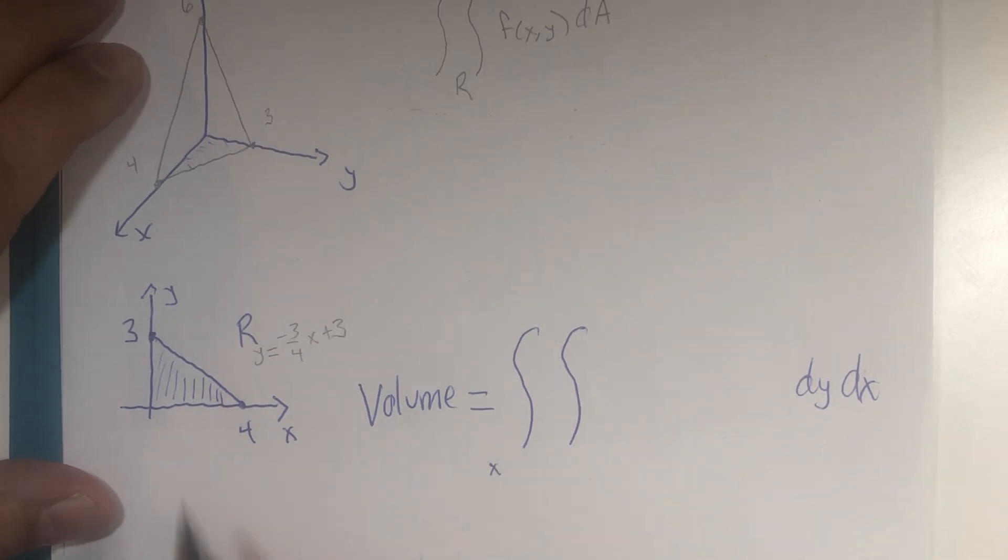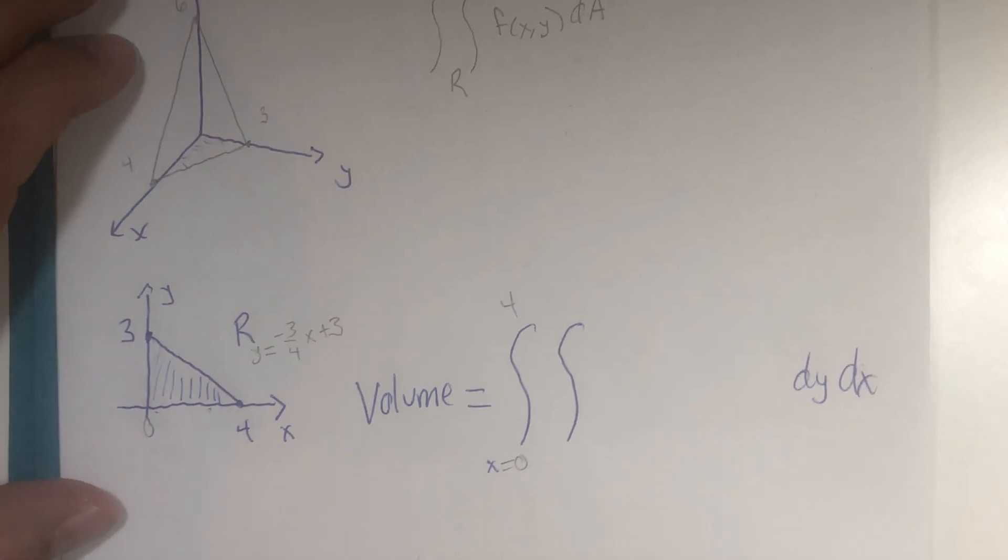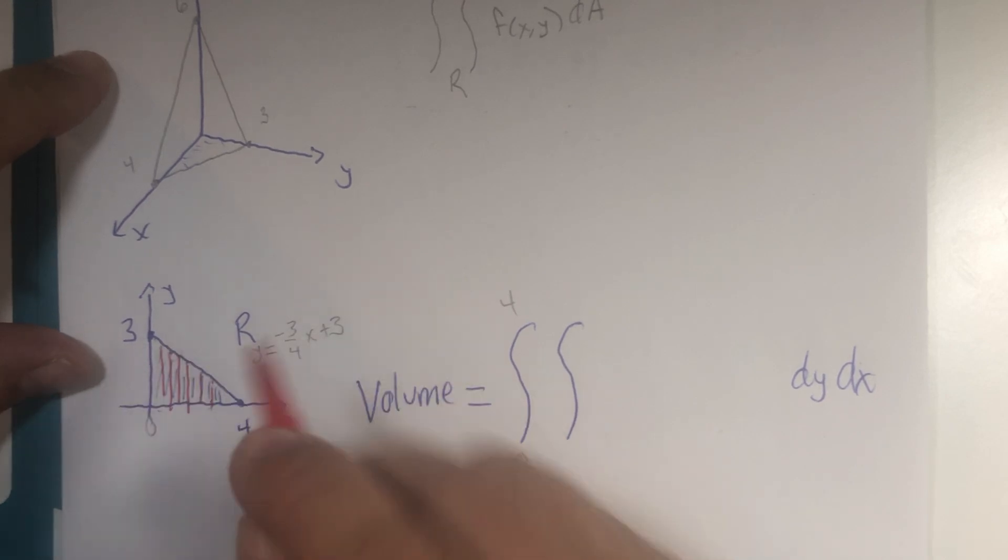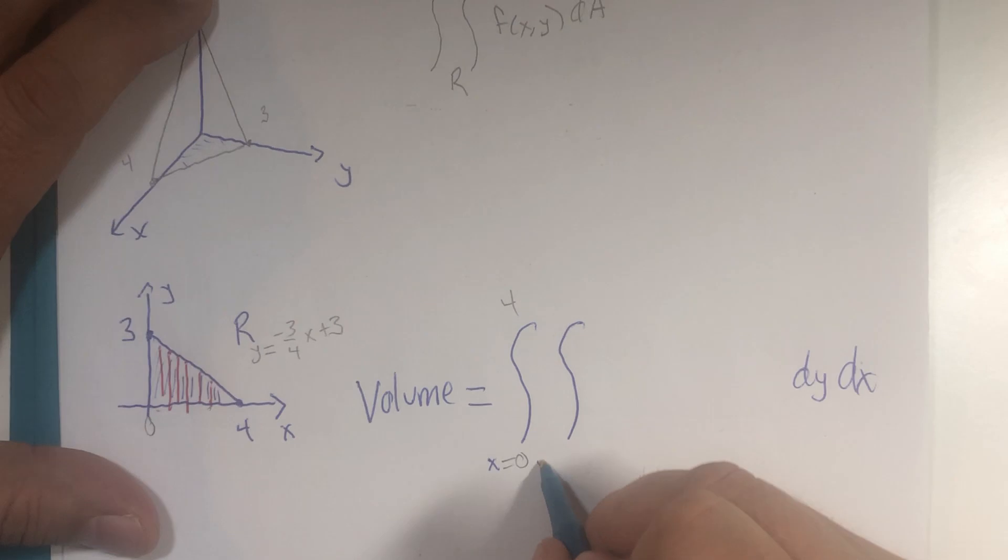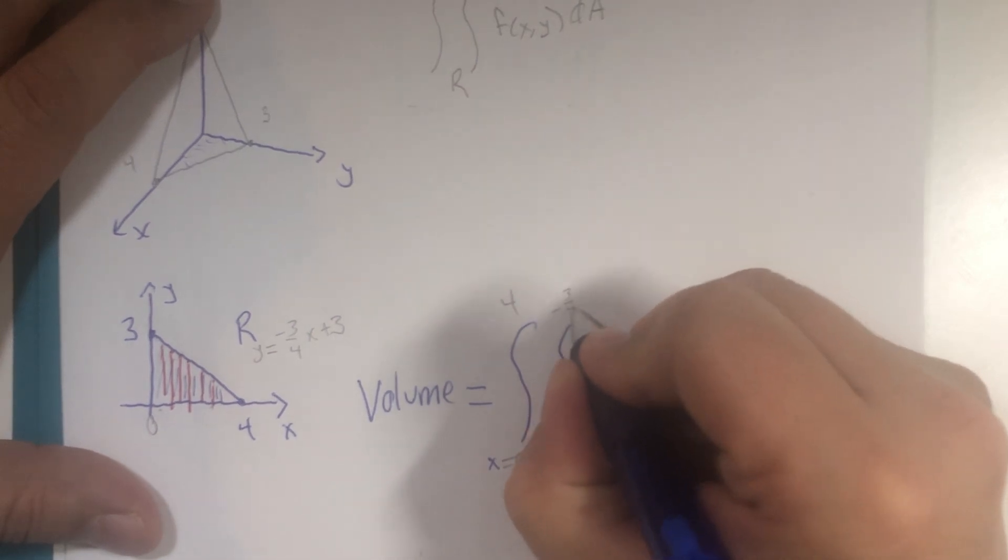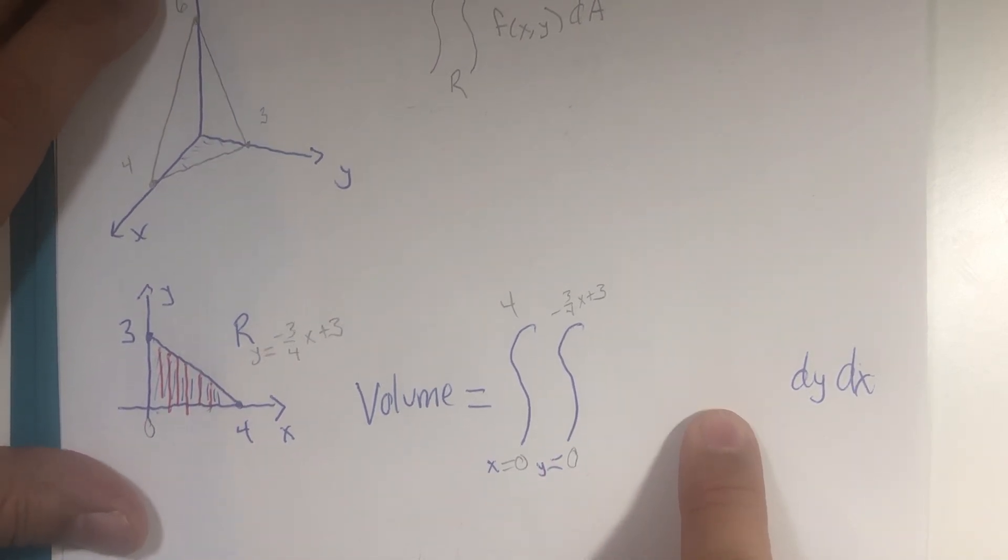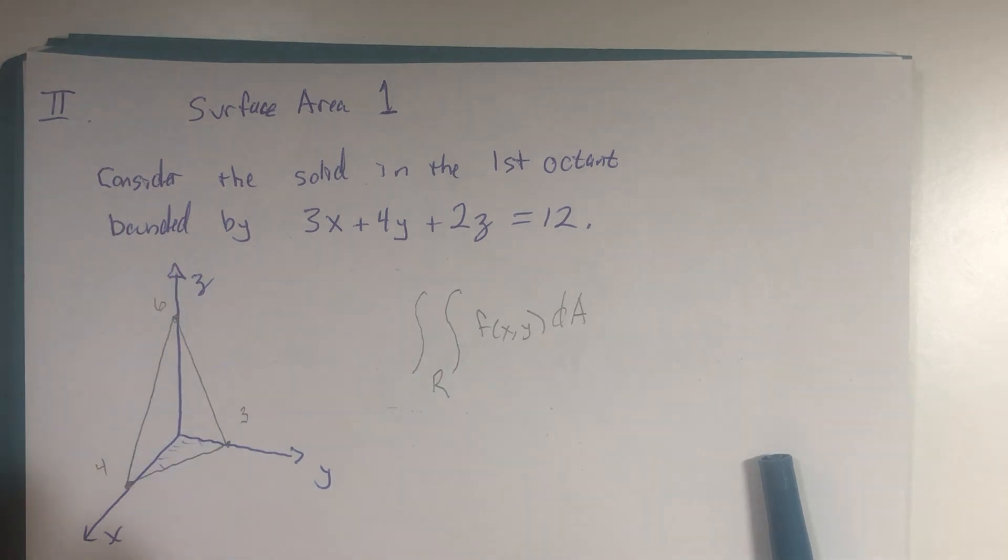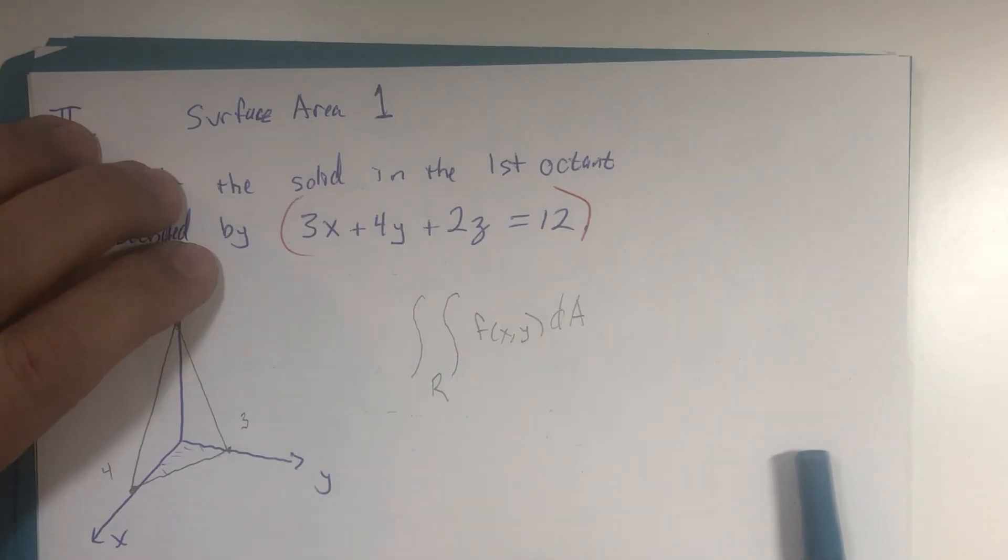x goes from 0 to 4. y varies between the x-axis and that line with that equation. The y values go from y equals 0 is the x-axis, and y equals negative 3/4 x plus 3 is the upper boundary. Now, about that function, we can solve this equation for z equals and have it become a function of y and x.